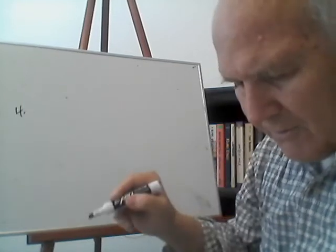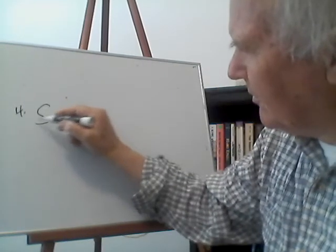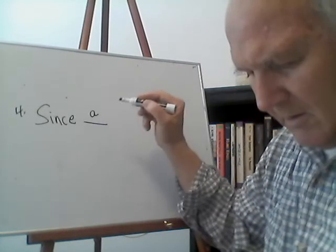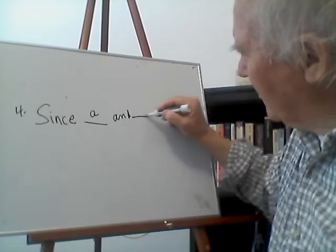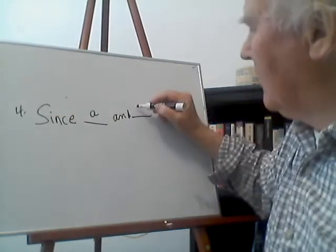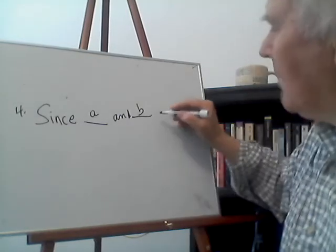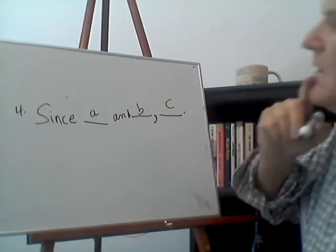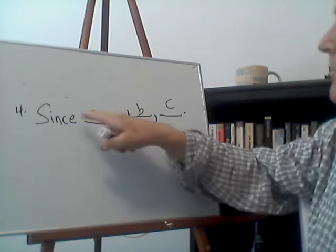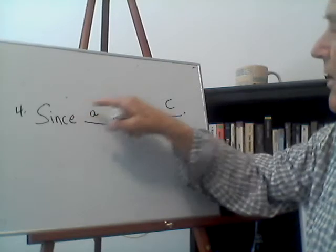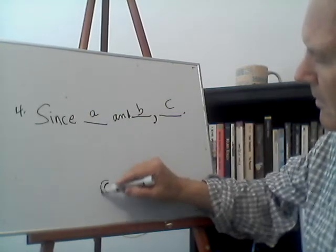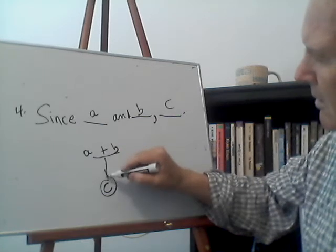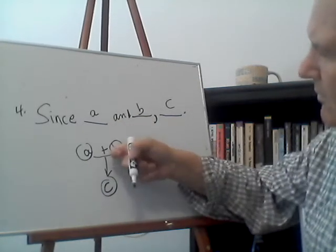Number four, Exercise 2.1: 'Since A and B, C.' We know 'since' is a premise indicator, so what comes after it is a premise. It says 'since A and B' — meaning they both have to be true — comma, C. The commas are very important because they tell you how to group things together. The conclusion is C, so you put C at the bottom. In the diagram, it's going to be A plus B — meaning they are dependent reasons that must both be true.